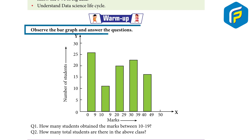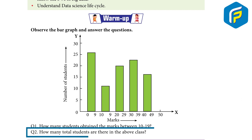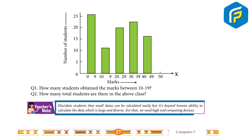Warm up: observe the bar graph and answer the questions. Question one: how many students obtain marks between 10 to 19? Question two: how many total students are there in the above class? Teacher's note: small data can be calculated easily, but it is beyond human ability to calculate data which is larger and diverse.